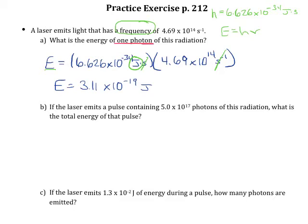So now they're telling us that instead of emitting one photon, we are emitting 5.0 times 10 to the 17 photons, and they still want to know the total energy. If I take a look at that first problem I solved, that energy is actually the energy per photon.